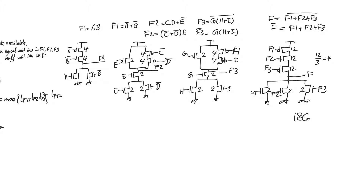The delay in the pull-down or pull-up network — always meaning worst-case delay — is r-naught over 2, because that is how we sized it. Thus the time constant is 9 r-naught c-naught. This is the worst-case time constant in either the pull-down or pull-up of gate f.